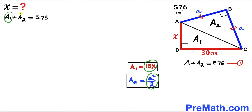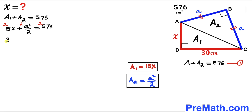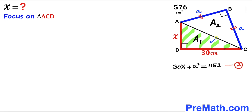Substituting those values into equation 1 gives us 15x plus a squared divided by 2 equals 576. We remove the fraction by multiplying every term by 2, giving us 30x plus a squared equals 1152. We label this as equation 2.